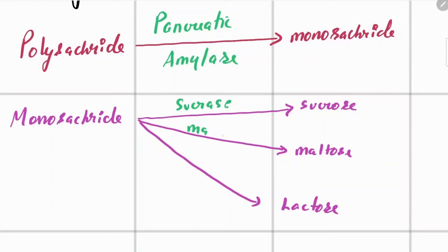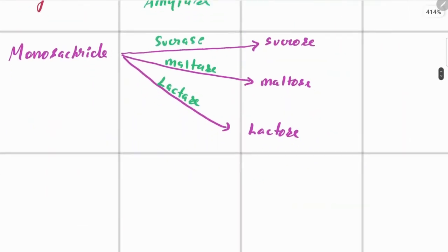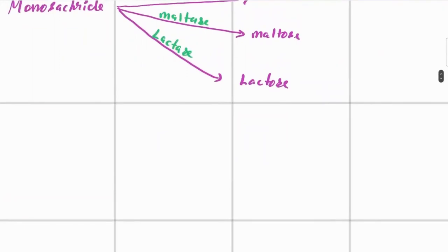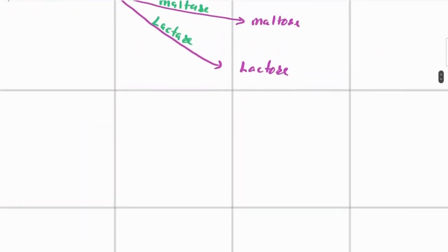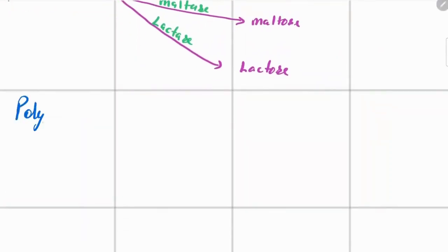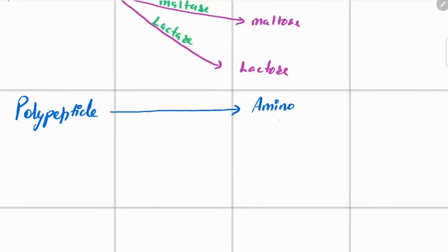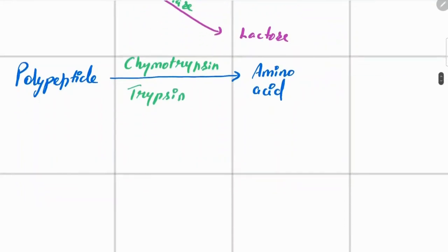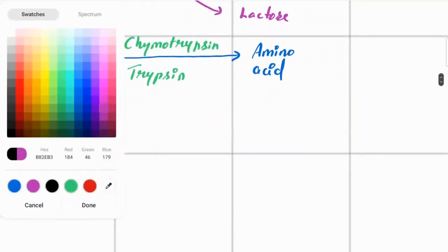Monosaccharides like sucrose, maltose, and lactose are digested by sucrase, maltase, and lactase respectively. Polypeptides, a type of protein, are broken down into amino acids by the action of chymotrypsin and trypsin, which are the active forms of chymotrypsinogen and trypsinogen.